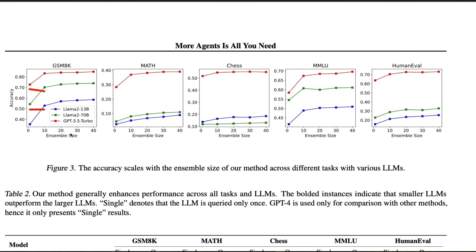Among the tests — GSM8K, MATH, CHESS, MMLU, HumanEval — if you compare one model versus scaling it to 10 models of the same type, the performance improves. For example, instead of one LLaMA 2 13B, you use 10 LLaMA 2 13B models. By stacking 10 LLaMA 2 70B models, you can achieve performance close to GPT-3.5 Turbo on GSM8K.